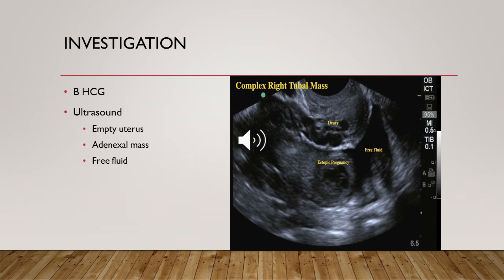When carrying out transabdominal or transvaginal ultrasound scan during early pregnancy, you should scan the uterus and adnexa to check for heterotopic pregnancy. Identifying an intrauterine pregnancy cannot exclude a co-existent ectopic pregnancy, so it is very important in any pregnancy scan to scan both the uterus and both adnexa.